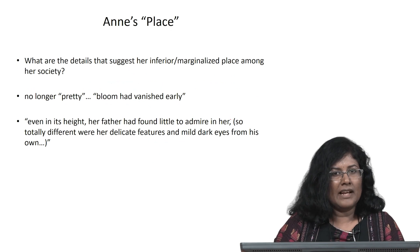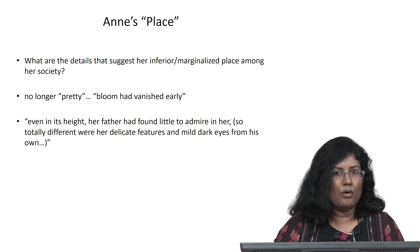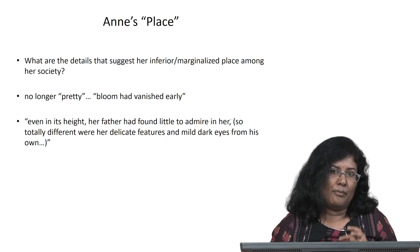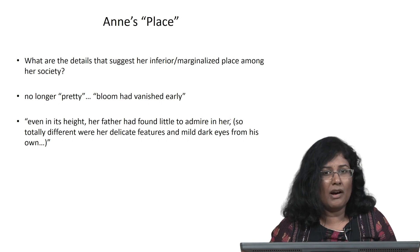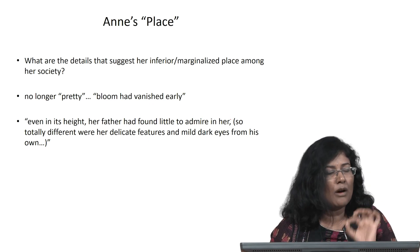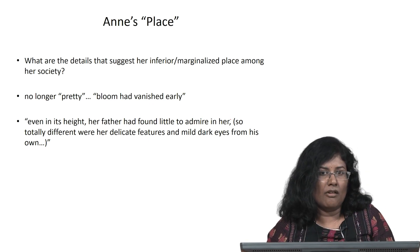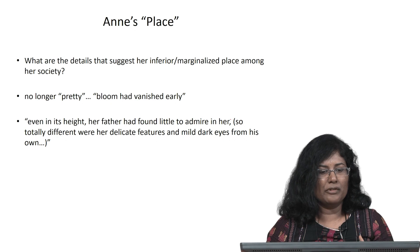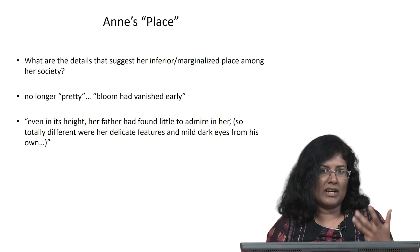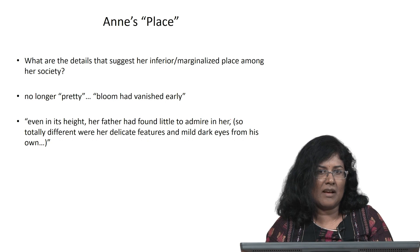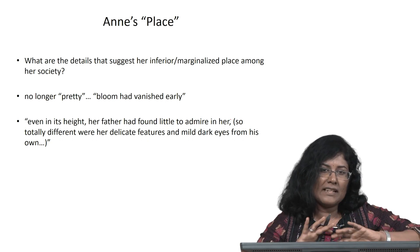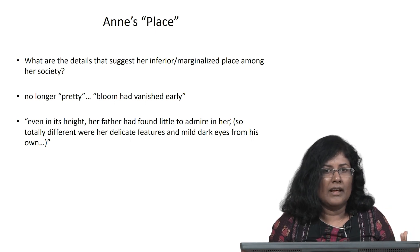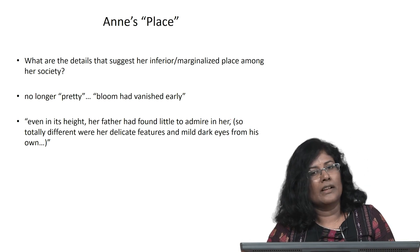The narrator now introduces a very important character — the character with whom the entire plot is fascinated, the young woman called Anne Elliot. Why is she introduced so late in the novel? That in itself is very interesting, and it tells us something about the attitude the rest of the family have towards Anne Elliot. She does not seem to be very important in the scheme of things for this particular Kellynch family.